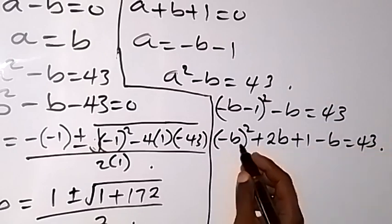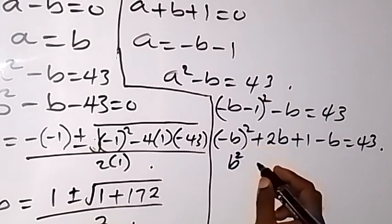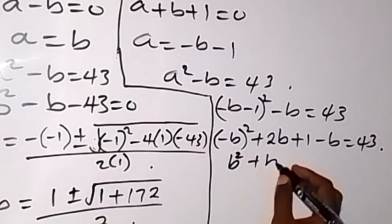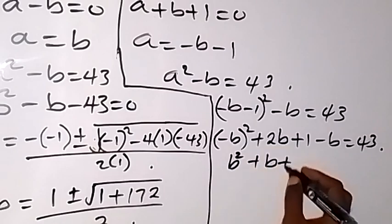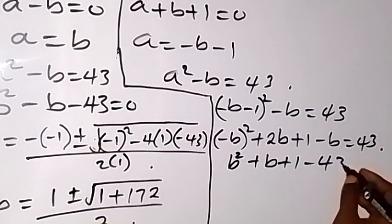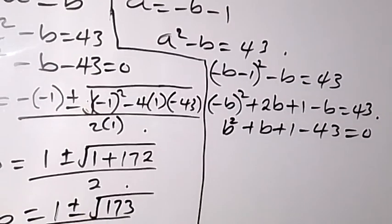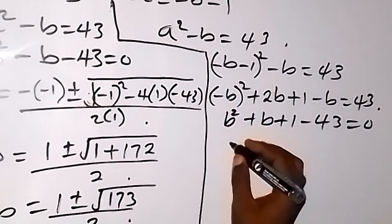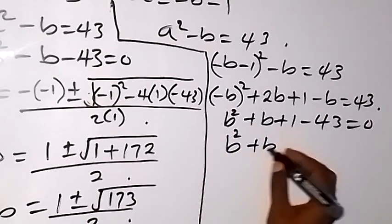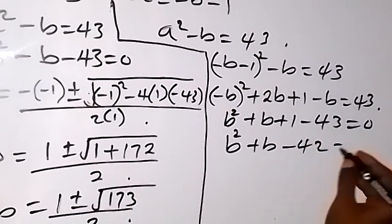Expanding this: minus b squared, plus 2b, plus 1, then minus b, equals 43. Simplifying, minus b squared plus b plus 1 minus 43 equals 0, which gives us b squared plus b minus 42 equals 0.